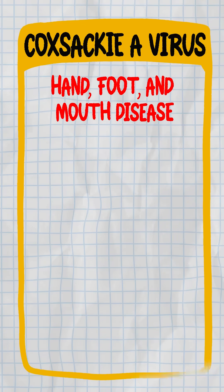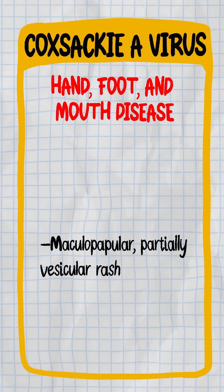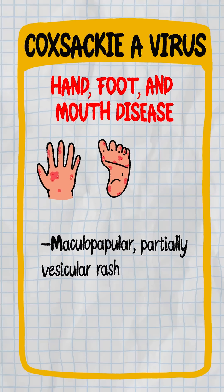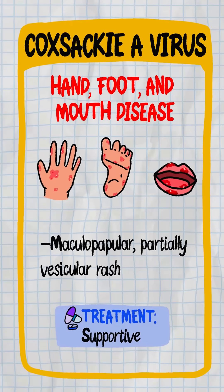Hand-foot-mouth disease from Coxsackie A virus shows vesicular rash on palms, soles, and inside the mouth. It's contagious but self-limited.